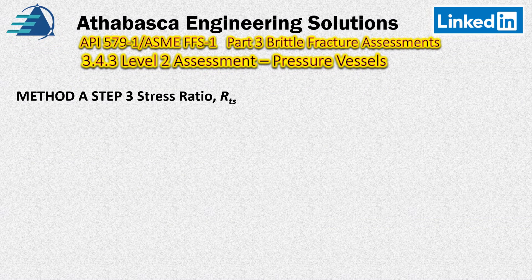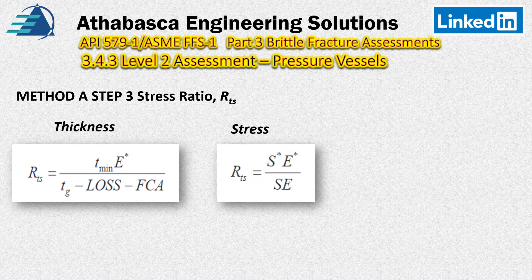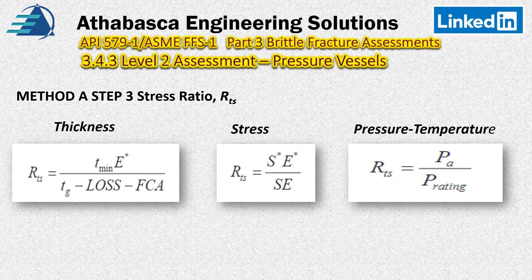Step three: stress ratio. There are a few ways of doing this. We look at the ratio of our thickness using the loss — that's the corrosion we've used up plus the future corrosion allowance — and we get our governing thickness from that, over T_minimum with the applicable weld joint efficiency. The third stress method is pressure-temperature, which is for hydro testing.